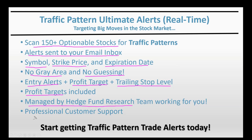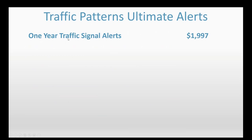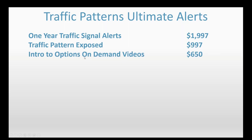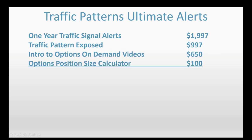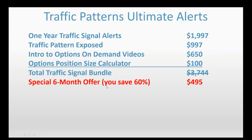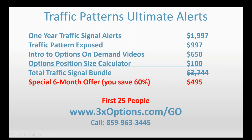Here's today's special promotional offer. The service normally goes for $1,997, the Traffic Pattern Exposed report normally goes for $997, the intro to options on-demand video library is normally $650, and the option position size calculator is normally $100 — a total of $3,744. We've knocked it down to a special six-month subscription for $495. Go to www.3xoptions.com/go to take advantage of this offer.